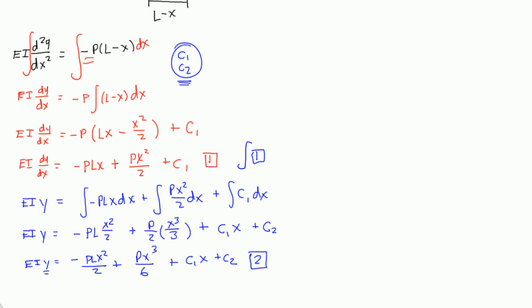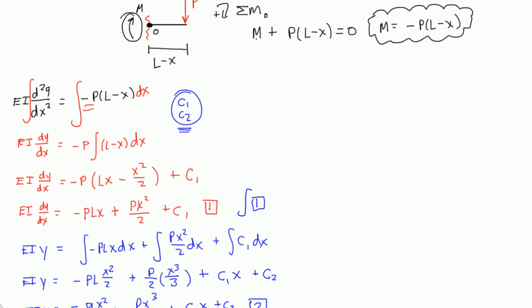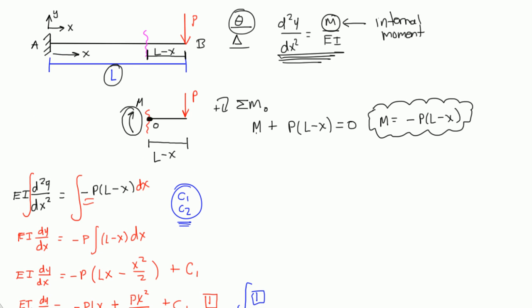So, if we look at our diagram up here, we know that at x equals 0, the slope is equal to 0 because this is a fixed end. And so that's one boundary condition.